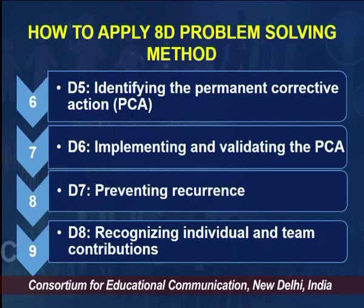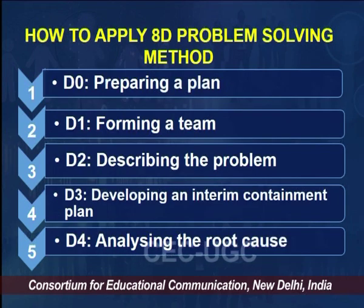Now let us begin with D0 — preparing a plan. One might ask: how can a business plan to solve a problem when the problem is not yet known? When we say preparing a plan, it does not mean planning for a particular problem. The plan must have categories of different problems — pertaining to customers, products, prices, operations, team members, and so on. Problems are grouped into different categories and there is a plan for each category.